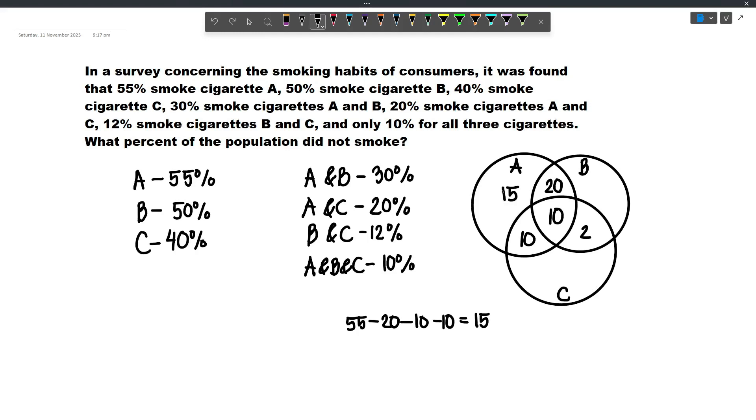And then for B, we will subtract these 3 values from 50. And so 50 minus 20 minus 10 minus 2 will become 18.